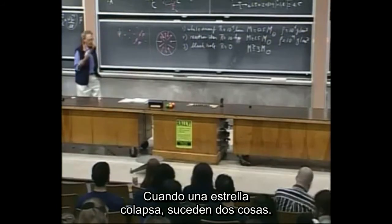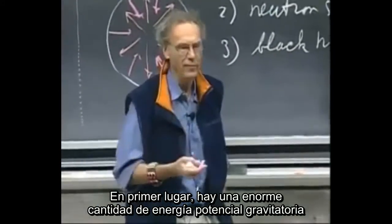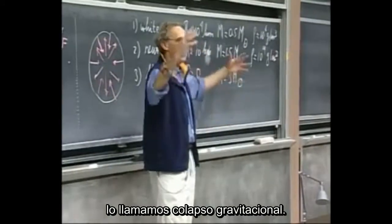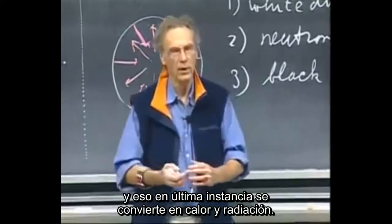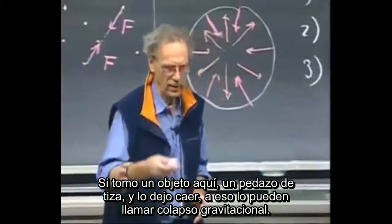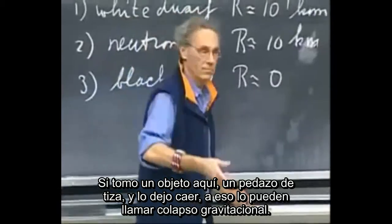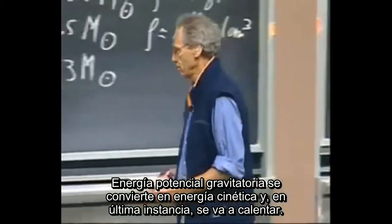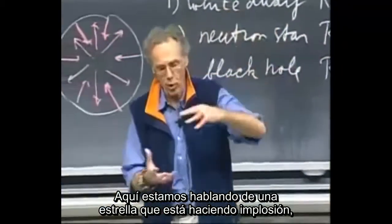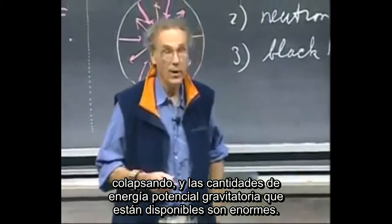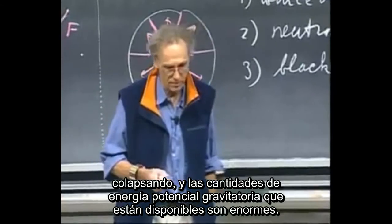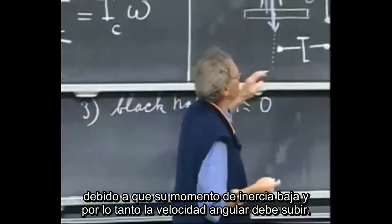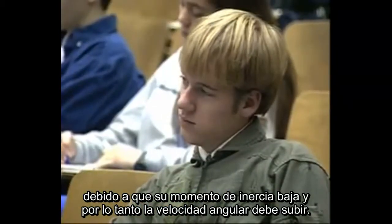When a star collapses, two things happen. First, a huge amount of gravitational potential energy is released as kinetic energy — we call it gravitational collapse — and that energy converts to heat and radiation. Just as dropping a piece of chalk converts gravitational potential energy to kinetic energy and ultimately to heat, here we're talking about a star imploding, and the amounts of energy are enormous. In addition, the star must spin up, because its moment of inertia goes down and therefore the angular velocity must go up.